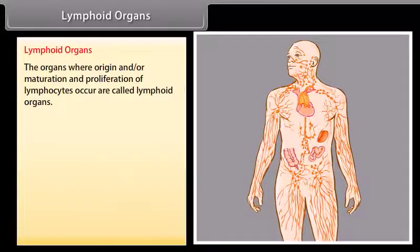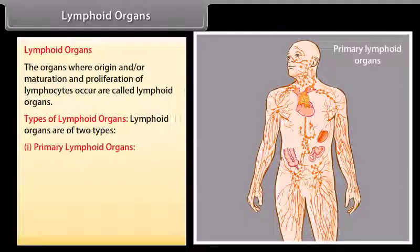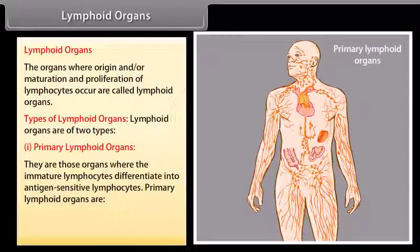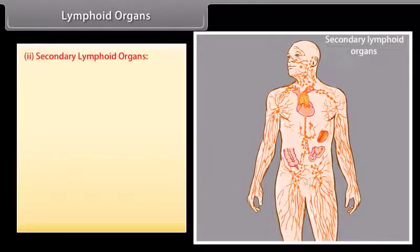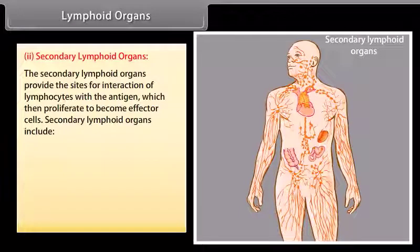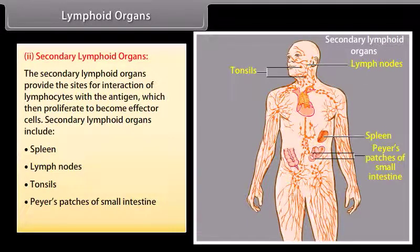The organs where the origin, maturation, and proliferation of lymphocytes occur are called lymphoid organs. They are of two types: primary lymphoid organs, where immature lymphocytes differentiate into antigen-sensitive lymphocytes (bone marrow and thymus); and secondary lymphoid organs, which provide sites for lymphocyte-antigen interaction — including spleen, lymph nodes, tonsils, Peyer's patches of the small intestine, and appendix.